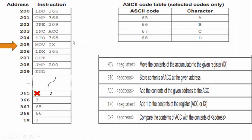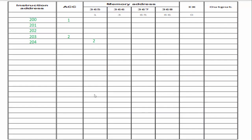Moving on, we have MOV — move the contents of the accumulator to the given register, which is the index register. That means I'm going to cross out the value of the index register and update it with the value of two. I document that on my trace table. Line 205 just went; my index register is now two.